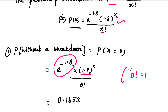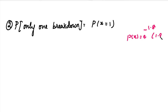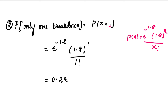The value e to the power minus 1.8 is computed using the calculator. Press the shift button, then press the corresponding button and press enter, then equal, to get e^(−1.8). For the second part, the probability of only one breakdown: P(X=1). Substituting X=1 gives e^(−1.8) times 1.8 to the power 1 divided by 1 factorial. Simplifying, this value is 0.2975.